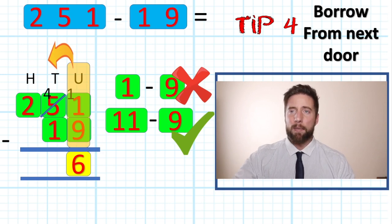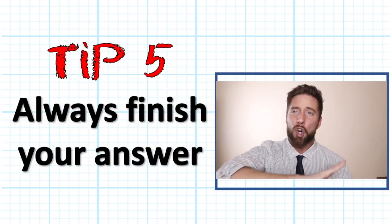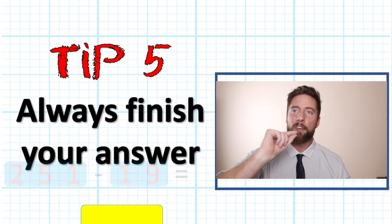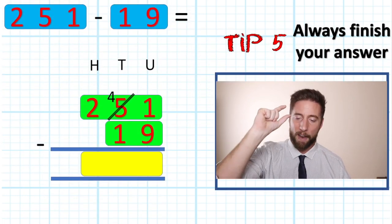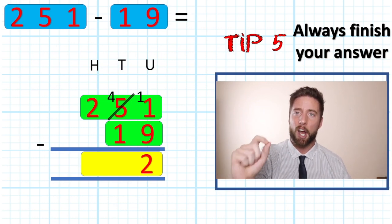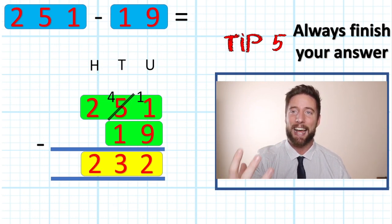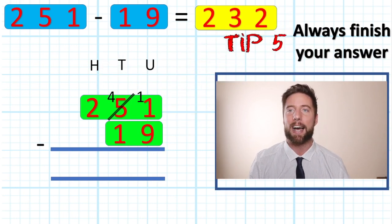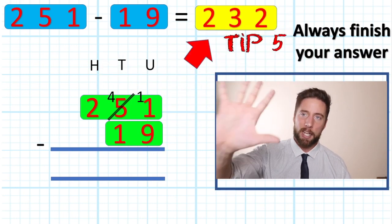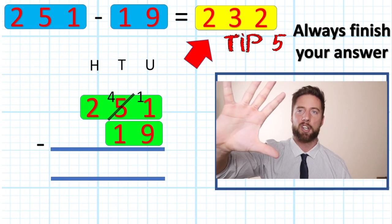Tip number five: complete your question. Don't forget to always finish your number sentence. 251 subtract 19 needs an answer. Give it the answer. Don't just leave it there in the answer row. Tip number five: always finish your answer.